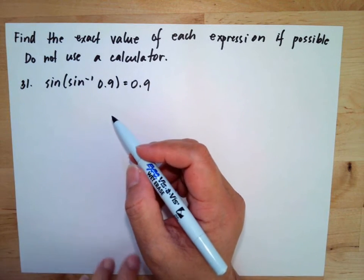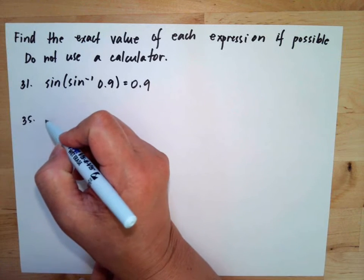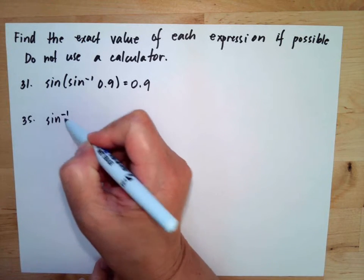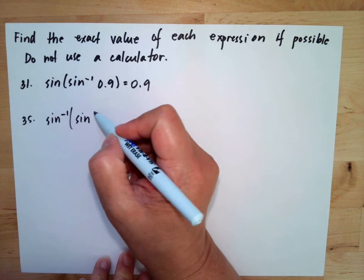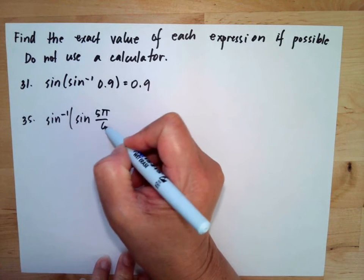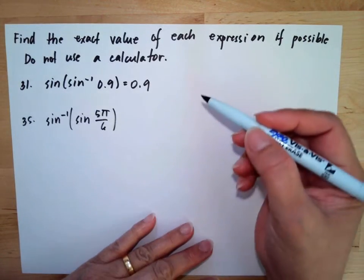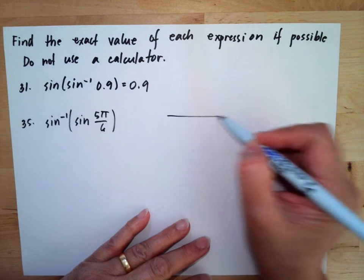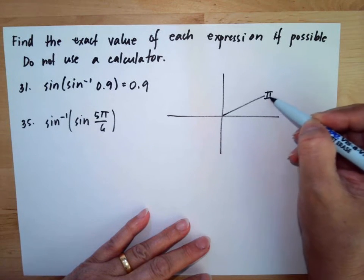Now let's see number 35. For number 35, it is sin^-1(sin(5π/6)). Now sin^-1 of 5π/6. So if we will do our unit circle. So this is our π/6.